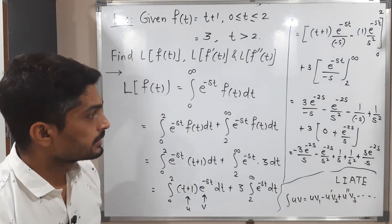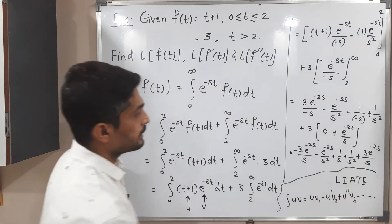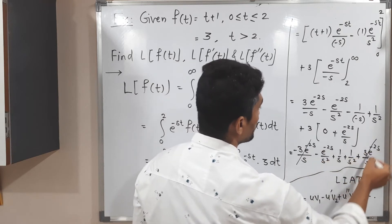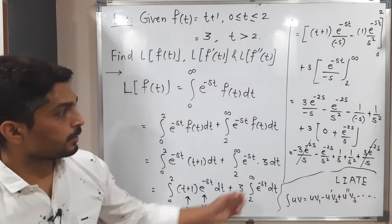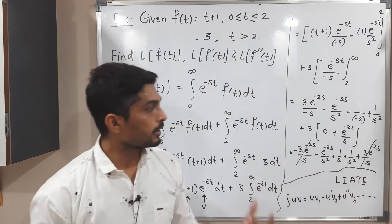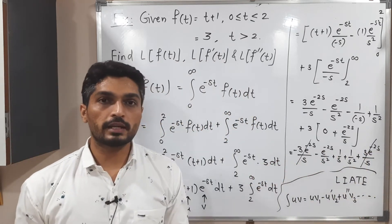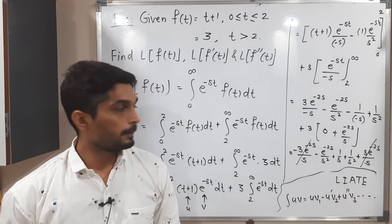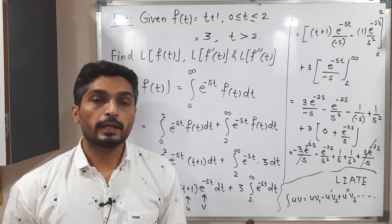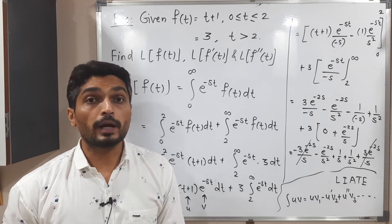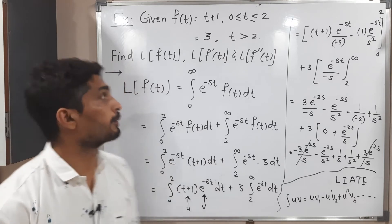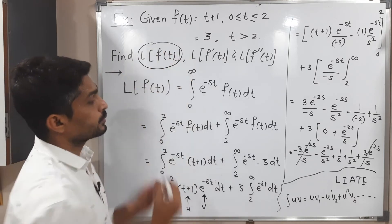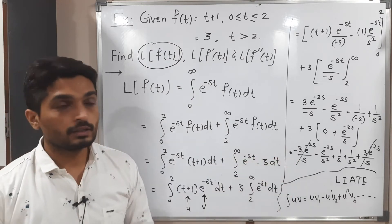Simplifying, we get: 3 e raised to minus 2s upon s, minus e raised to minus 2s upon s squared, plus 1 by s, plus 1 by s squared, plus 3 e raised to minus 2s upon s. These two groups of terms cancel each other since they have opposite signs, and only three terms remain, giving us the required Laplace transform of f of t.